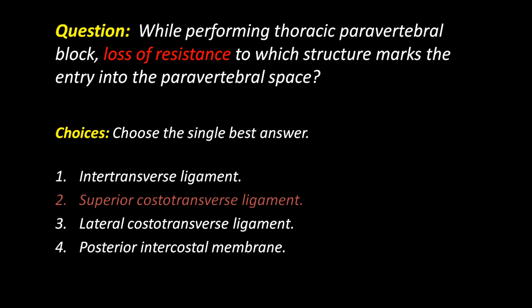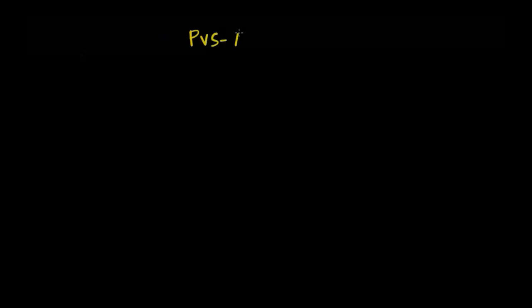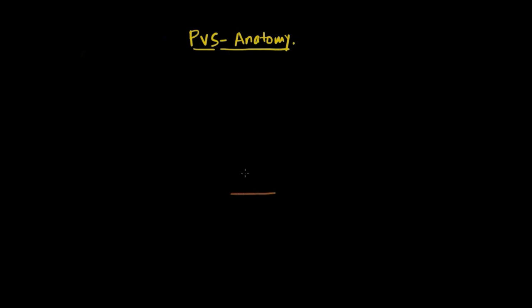Let's have a closer look at the paravertebral space and its anatomy and get to know why that might be so. The paravertebral space essentially is a space that lies lateral to each vertebral level. If we have a look at the thoracic vertebrae,